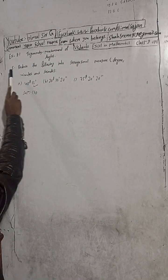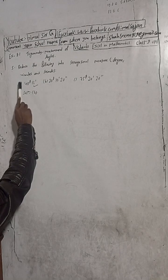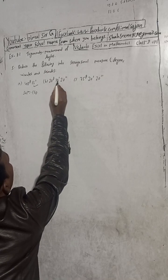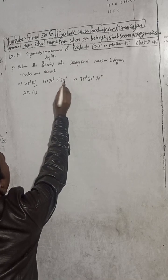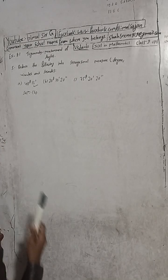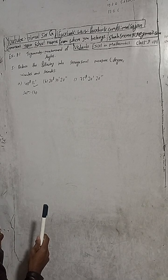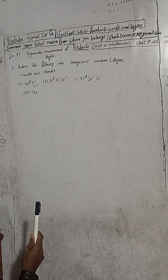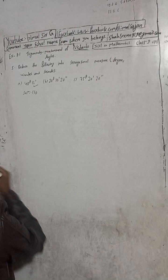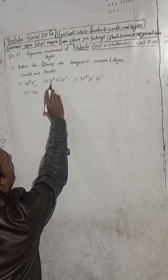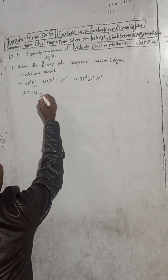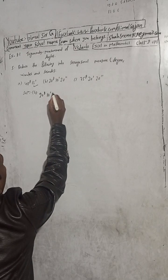Let's begin question number 5b - part a is already done, check the playlist. Here in part b, the given angle is 20 grades, 10 minutes, 20 seconds. We have to convert it into sexagesimal system - that means degrees, minutes, and seconds.